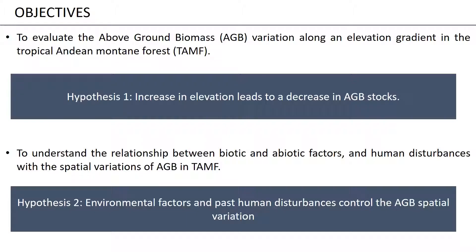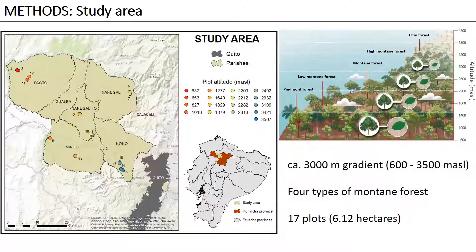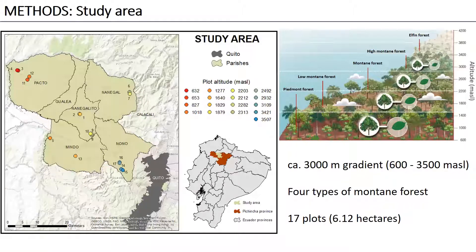This study was carried out in a monitoring system established in 2015 in Ecuador in Pichincha province. This system covers an elevation gradient of approximately 3,000 meters, from 600 to 3,500 meters above sea level. Along the gradient, we are evaluating four different types of mountain forest and we have established 17 plots. We are using square plots of 60 by 60 meters, and inside the plots we are evaluating the above-ground biomass dynamics.